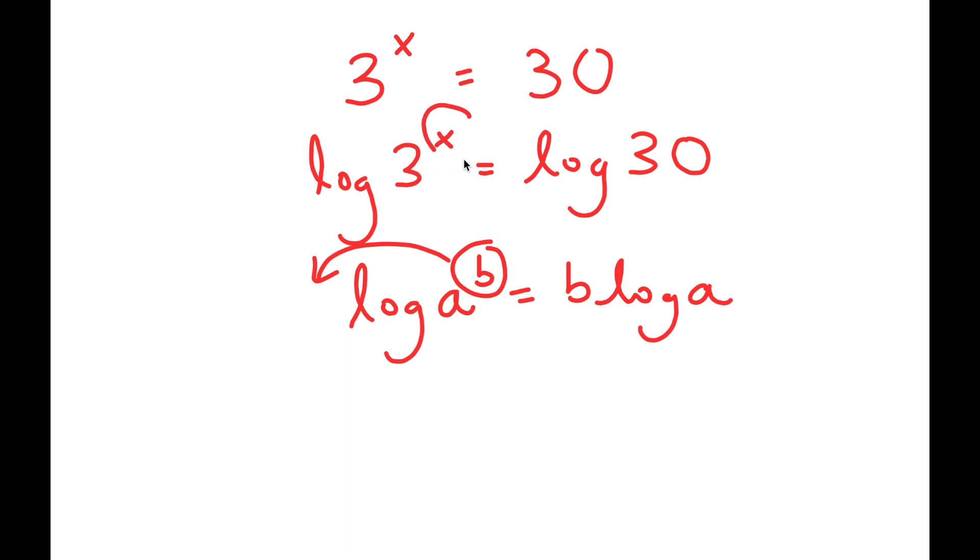In this case, I have log 3 to the power of x, and I can move x to the front, so I get x times log 3 is equal to log 30.